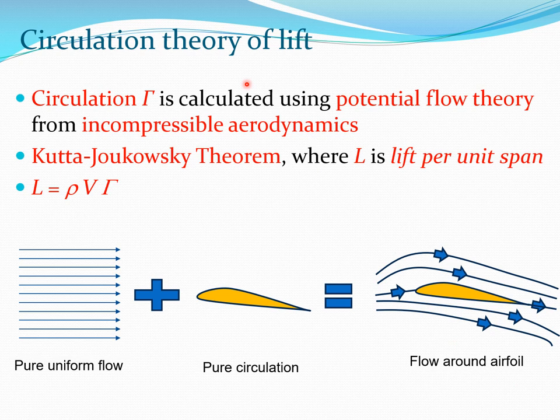Circulation can be calculated using potential flow theory — this is studied in detail in aerodynamics courses and is related to complex number theory. From that theory we get the Kutta-Joukowski theorem, which gives the lift per unit span as L = ρVΓ. This compact theorem tells you that lift is simply the density times the velocity of the body times the circulation.